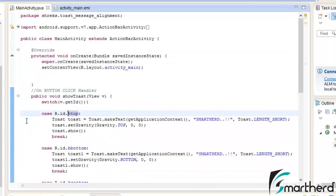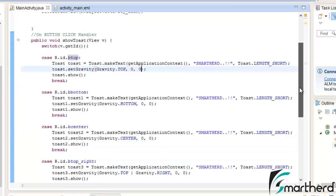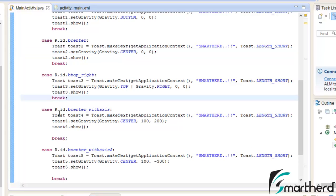Now when the top button is clicked, this case will be executed and it is going to show the message at the top of the screen. Similarly for bottom, Gravity.BOTTOM, similarly for center like this. Then center with axis, I am having the two parameters. Gravity.CENTER, deviation from center is 100 and 200.